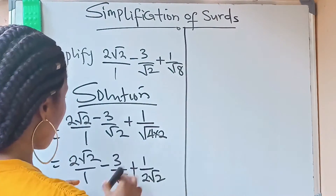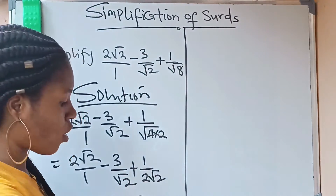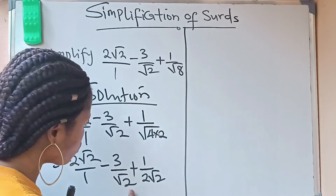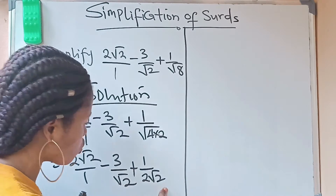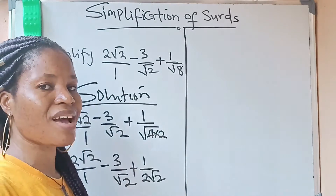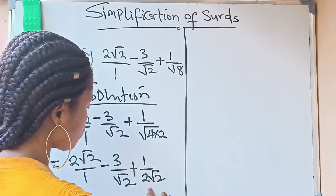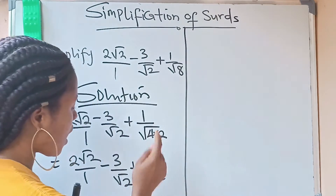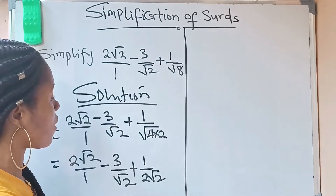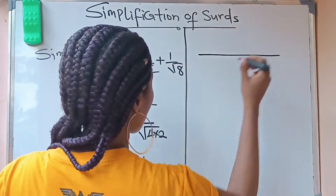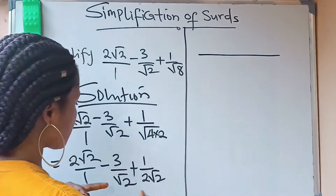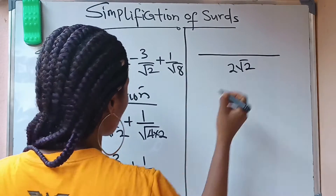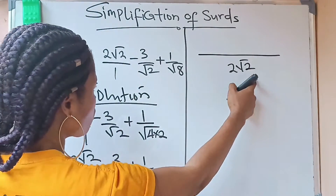Now we need to find the LCM of the denominators: 1, root 2, and 2 root 2. The LCM is 2 root 2, because 2 root 2 is the only number that both root 2 and 2 root 2 can divide into. So we draw a line and our LCM is 2 root 2.